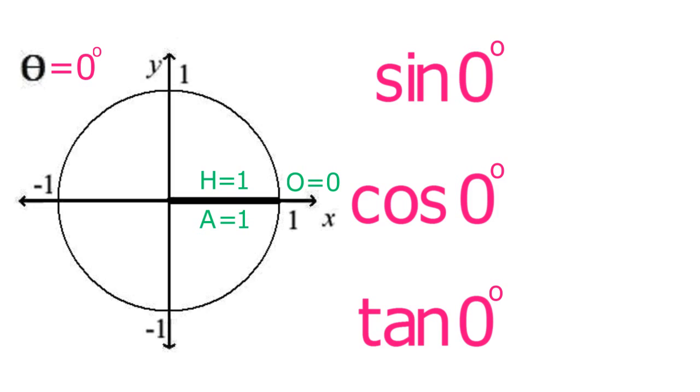For example, the sine of 0 degrees equals opposite over hypotenuse, which is 0 over 1, so the sine of 0 degrees equals 0.